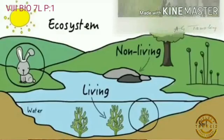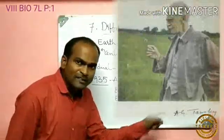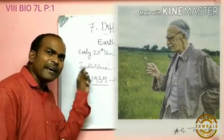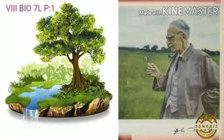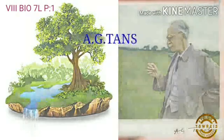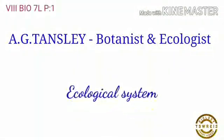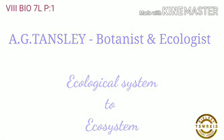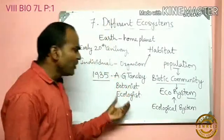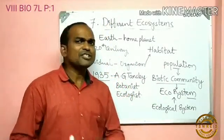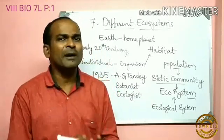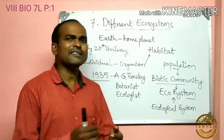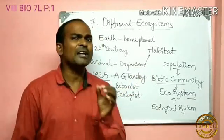The word 'ecosystem' was first used in 1935 by a British botanist and ecologist, A.G. Tansley, to describe the basic unit of nature. Tansley coined the word 'ecosystem' as a reduction of the term 'ecological system.' According to him, nature works as a system in which organisms and their communities are influenced by non-living environmental factors.